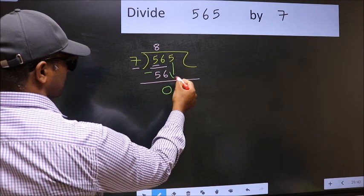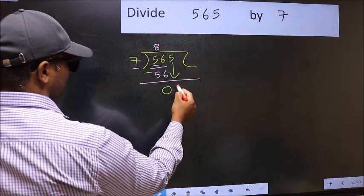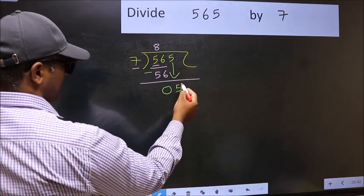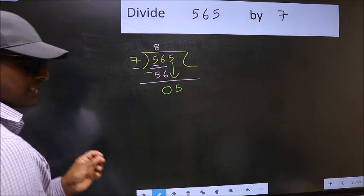After this, bring down the beside number. So 5 down. After this step, the mistake happens.